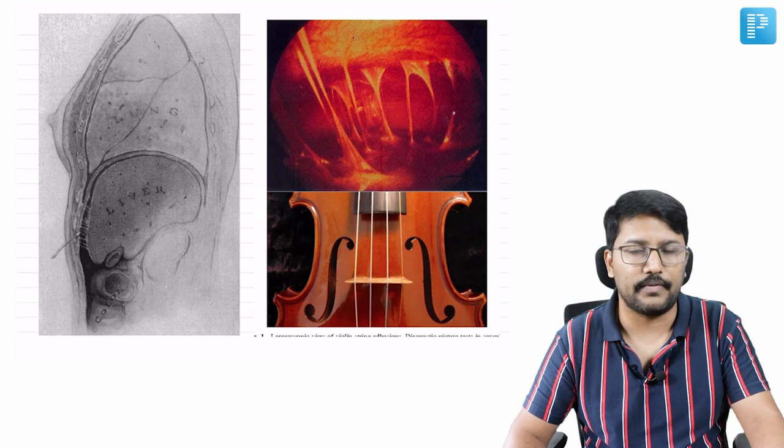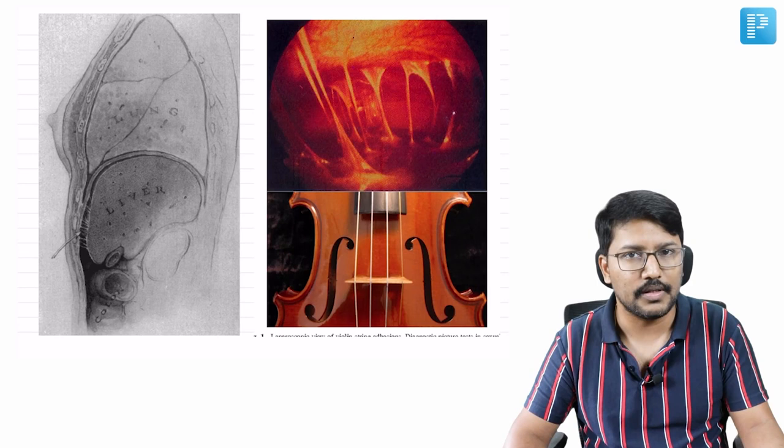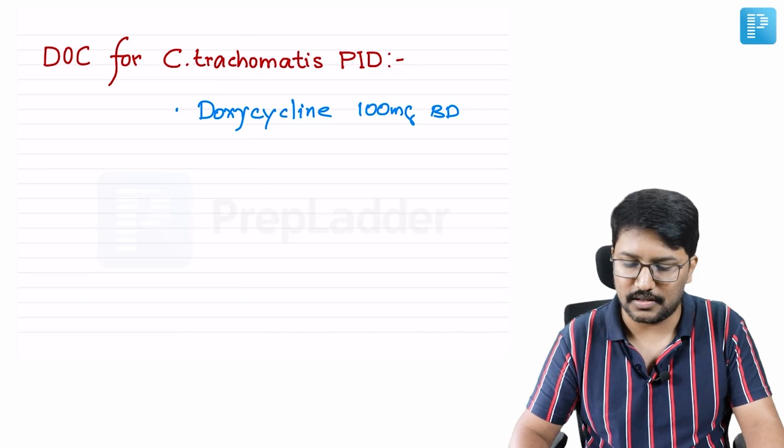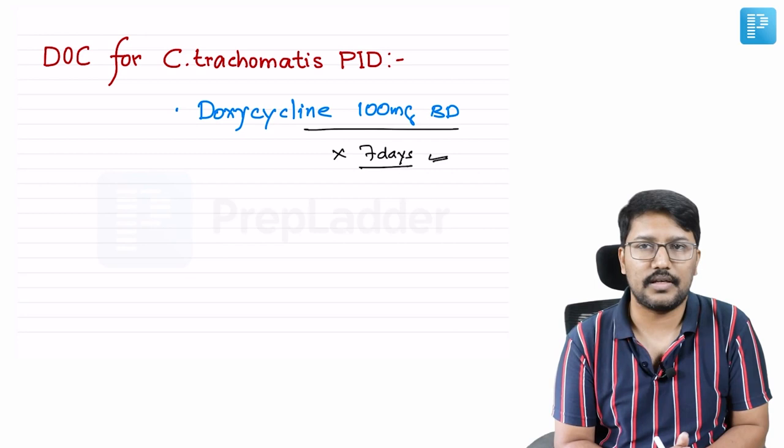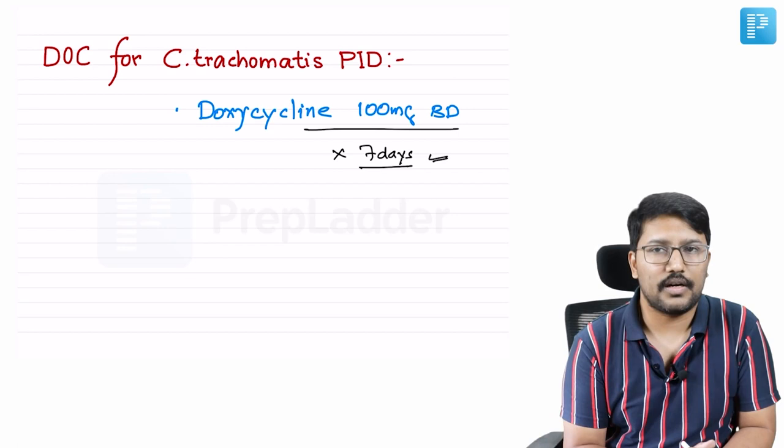Coming to treatment: we have to eradicate the infection, and if adhesions are a problem, surgical adhesiolysis is required. The drug of choice is doxycycline 100 milligrams BD for 7 days - that is the drug of choice for treatment of Chlamydia trachomatis PID. If adhesions are causing manifestations, proceed with surgical adhesiolysis, which is most often carried out through a laparoscopic approach today.